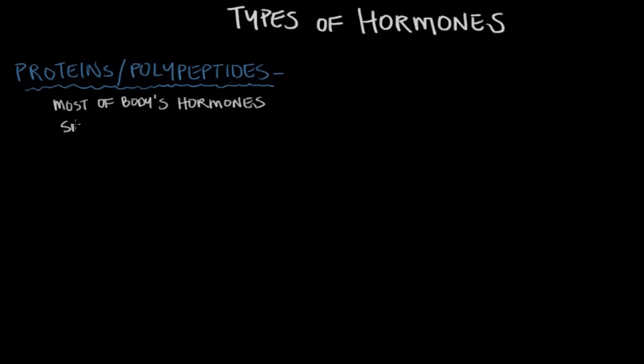These hormones can range from small to large. For example, imagine three or so amino acids linked together forming a hormone — that would be a small polypeptide. Three amino acids means maybe 20 or so atoms. As a frame of reference, one cell in your body has on the order of a trillion atoms, and there are a hundred trillion cells in your body — so we're talking about very, very small things.